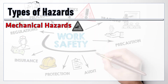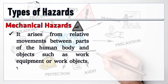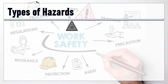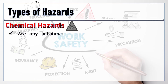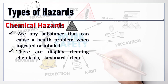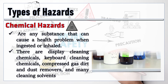Next is mechanical hazards. These arise from relative movements between parts of the human body and objects such as work equipment or work objects, which lead to their contact. Another type is chemical hazards — any substance that can cause a health problem when ingested or inhaled. Examples include display cleaning chemicals, keyboard cleaning chemicals, compressed gas dirt and dust removers, and many cleaning solvents.